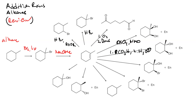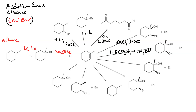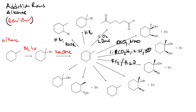Here we've made the halohydrin. To make the alkyl dibromide — that's anti addition — we would use Br2 in CCl4.